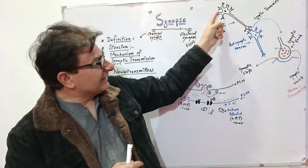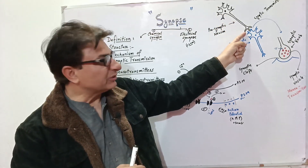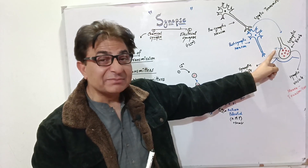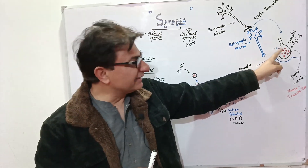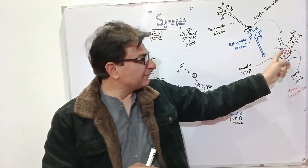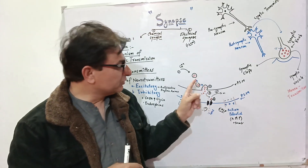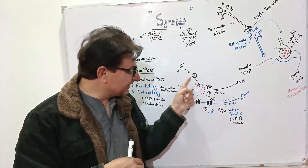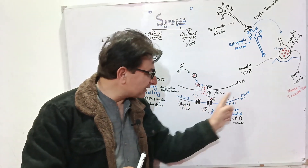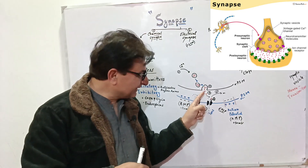Synaptic transmission occurs as follows: once the action potential traveling along the neuron reaches the end of the neuron, the permeability to calcium increases, and calcium starts entering into the synaptic knob. When calcium enters the synaptic knob, it causes cyclosis — movement — which moves the synaptic vesicles toward the pre-synaptic membrane. They fuse with it and release their contents, the neurotransmitters, into the synaptic cleft.